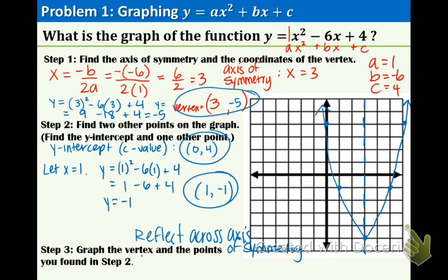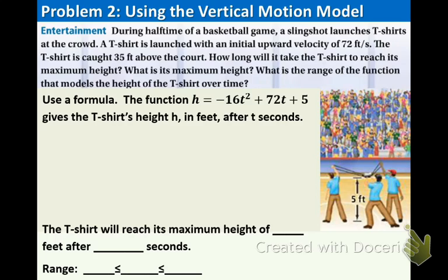These problems take a while but they are worth the time. So now you're thinking to yourself, well what's the application of this, right? Here you have it. Anybody interested in basketball or slingshots, t-shirts, anything like that? So now let's read this together. During halftime of a basketball game, a slingshot launches t-shirts at the crowd. A t-shirt is launched with an initial upward velocity of 72 feet per second. The t-shirt is caught 35 feet above the court. How long will it take the t-shirt to reach its maximum height? What is its maximum height? What is the range of the function that models the height of the t-shirt over time?